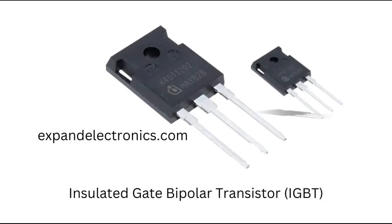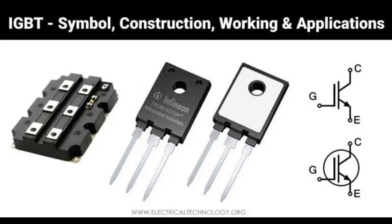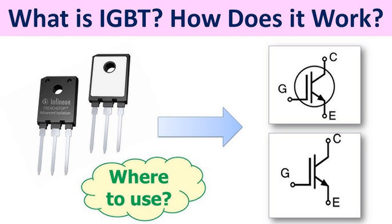Gate voltage control — IGBTs are voltage-controlled devices, meaning a small voltage applied to the gate can control large currents flowing between the collector and emitter. This provides a key advantage over current-controlled devices like BJTs, reducing the power needed to drive the switch. Low gate drive power — the gate of an IGBT is insulated, resulting in high input impedance, requiring very little power to switch the device on or off, similar to a MOSFET. Low on-state voltage drop — when the IGBT is in the on-state, the voltage drop between the collector and emitter is typically in the range of 1.5 to 3V, reducing power dissipation during conduction.